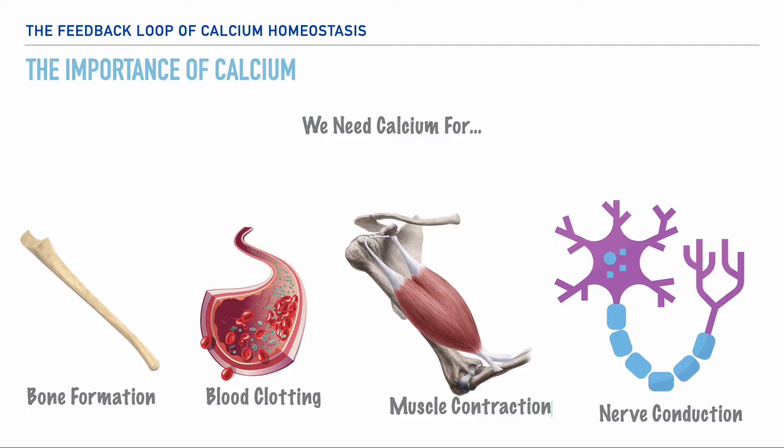And because we have such a great need for calcium, our body utilizes a feedback loop to help us fend off periods when blood calcium may be too high — we call that hypercalcemia — and when blood calcium levels may be too low — we call that hypocalcemia.